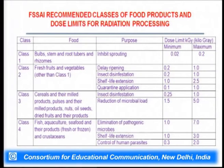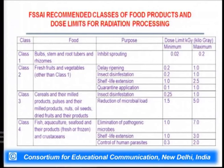FSSAI divides all food ingredients into eight classes (Class 1 to 8) with specified purposes and dose limits. Class 1 covers bulbs, stems, roots, tubers, and rhizomes; purpose is inhibiting sprouting; dose range is 0.02 to 0.2 kilogryas. Class 2 covers fresh fruits and vegetables (not in Class 1); purposes include delay in ripening (0.2–1.0 kGy), insect disinfestation (0.2–1.0 kGy), shelf life extension (1.0–2.5 kGy), and quarantine application (0.1–1.0 kGy).